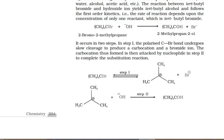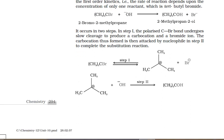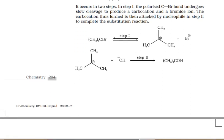In the first step of SN1 — the slowest, rate-determining step — the carbon-halogen bond breaks and the leaving group departs as X⁻ (halide ion), forming a carbocation. As studied earlier, carbocation is sp2 hybridized with trigonal planar geometry.